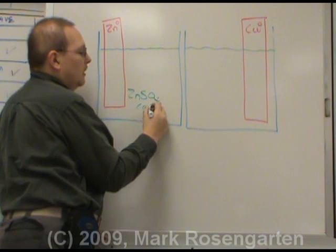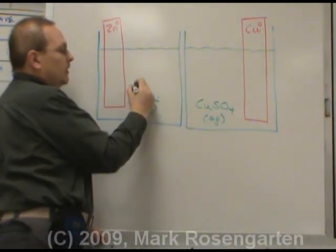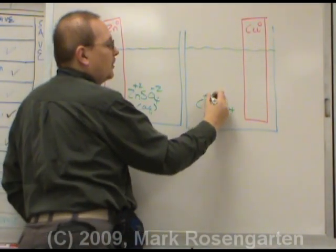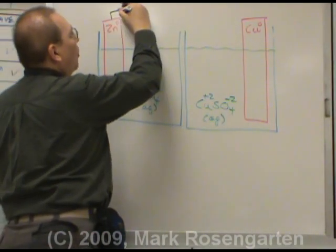In this case zinc sulfate, and in this case copper two sulfate. This provides a source of zinc ions, this provides a source of copper ions. We connect the metal strips with wires.